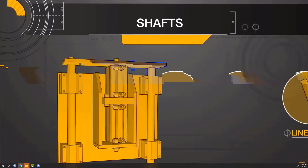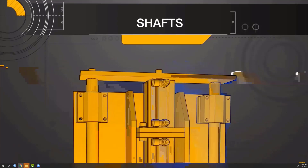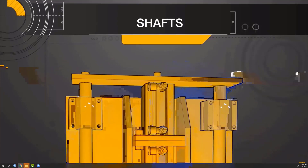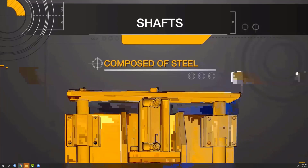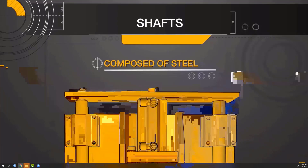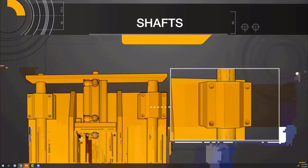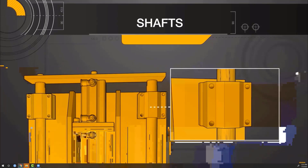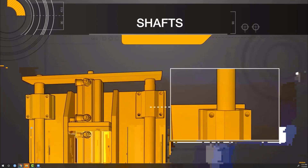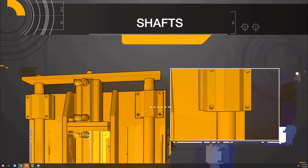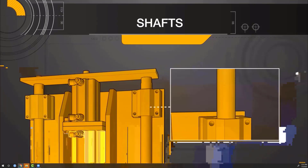Linear shafts are utilized in load transport applications and mate with complementary accessories such as linear bushings. Linear shafts are composed of steel, but standard carbon steel is relatively soft. The direct contact with mating accessories can cause the steel to wear prematurely. Because of this, Misumi induction hardens its linear shafts, also known as case hardening, to withstand the wear of the bushing riding directly on the shaft.